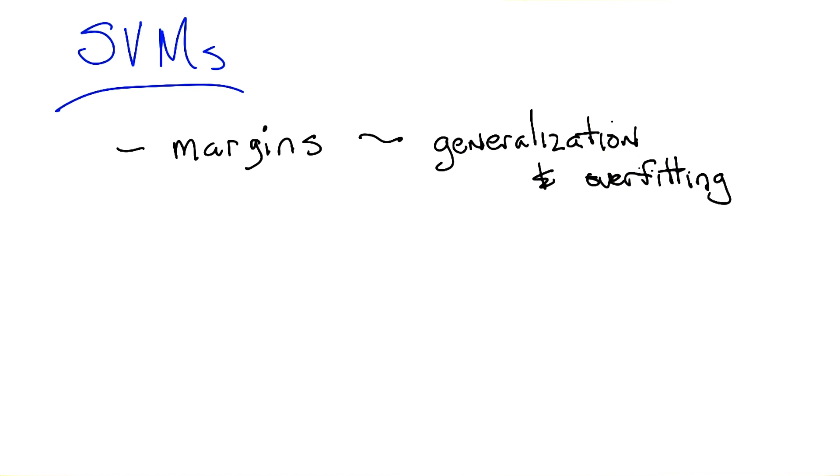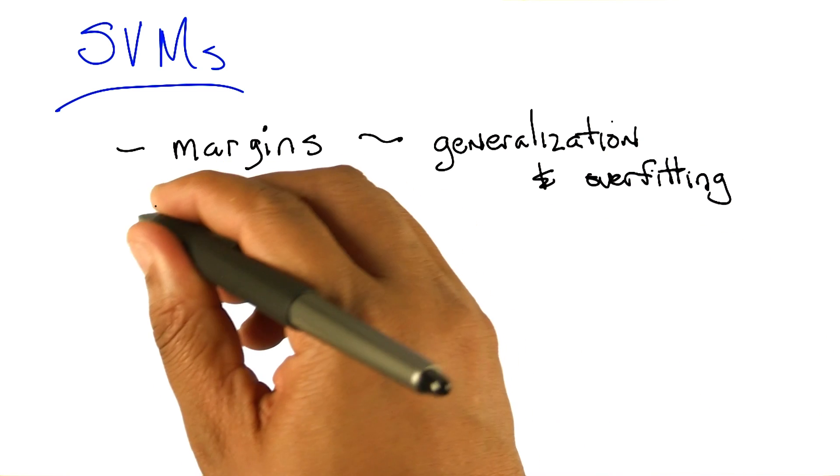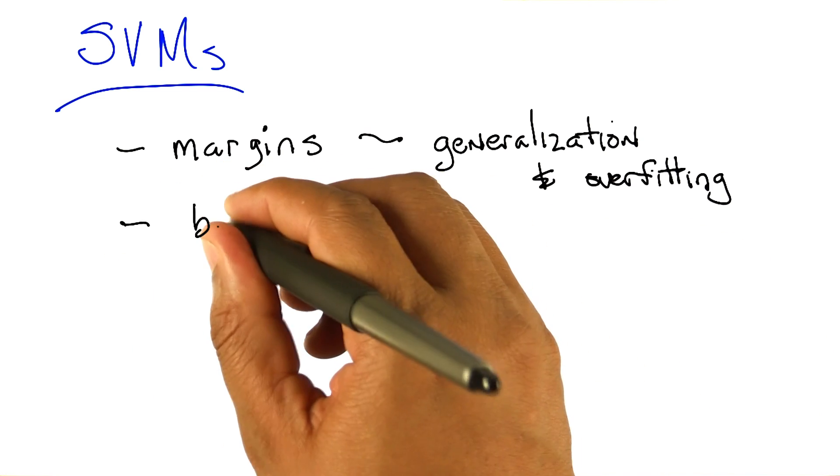In particular, we would like, given the choice, to find a linear separator that has the largest margin. Right. So maximizing margins. At least when it comes to margins, bigger is better.